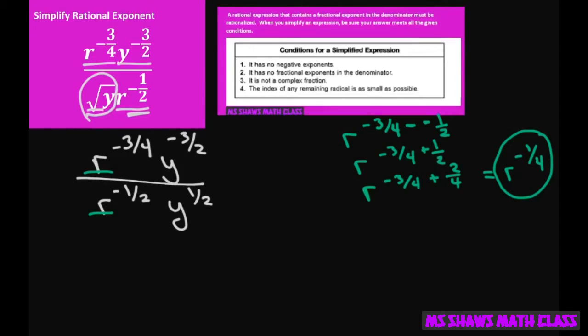Now let's do the same thing with my y. I have y to the negative three-halves minus one-half, and I'm using my quotient property. That's going to give me y to the negative four-halves, which gives me y to the negative two.